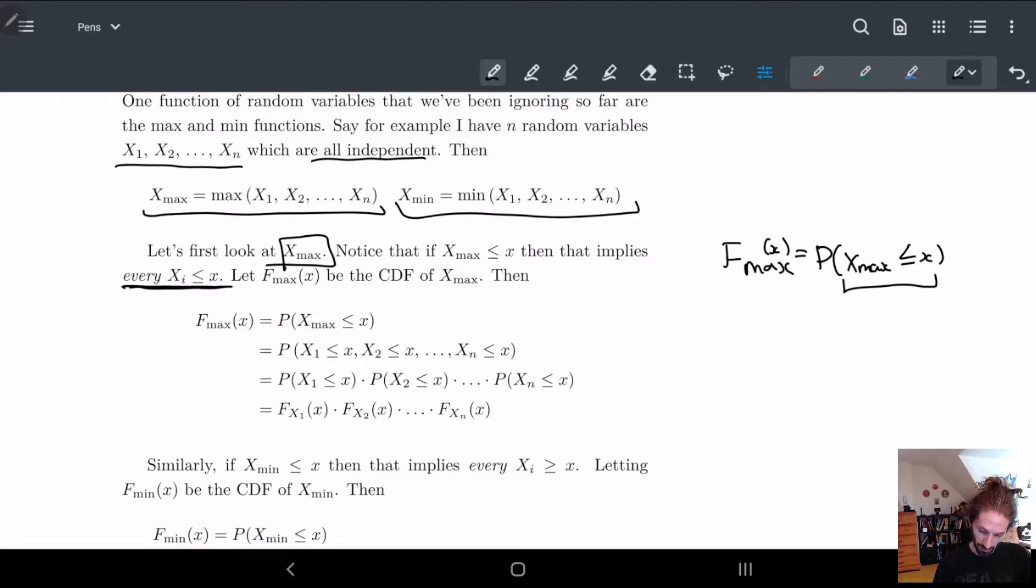So if every single one has to be less than or equal to x, we end up getting this one. They're all independent, so applies to all. They're all independent, so we can split them up. And then by definition, each one are just equal to their own individual probabilities. This is the definitions. So in other words, we can just convert back into the CDF of the other ones.